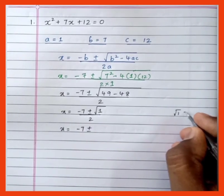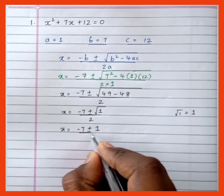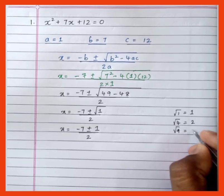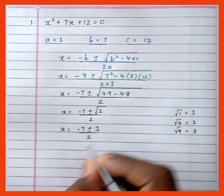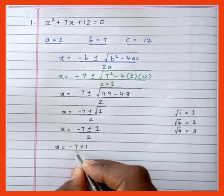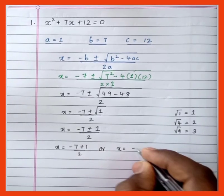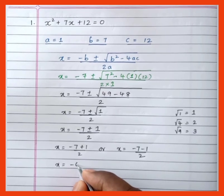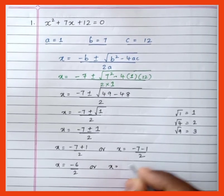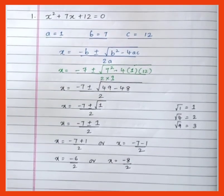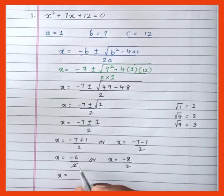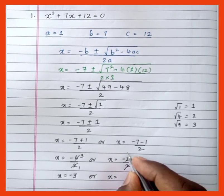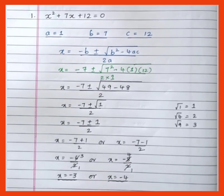The square root of 1 is 1. Now take the plus value: x = (-7 + 1) / 2 = -6 / 2 = -3. And take the minus value: x = (-7 - 1) / 2 = -8 / 2 = -4. Therefore x = -3 and x = -4 are the solutions of this equation.